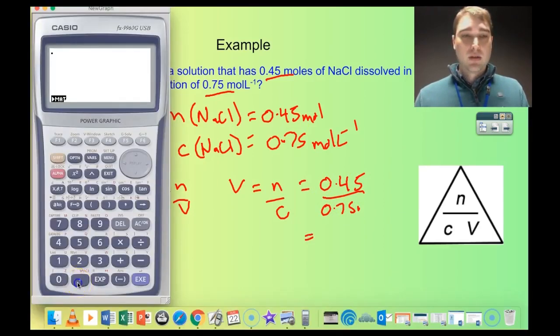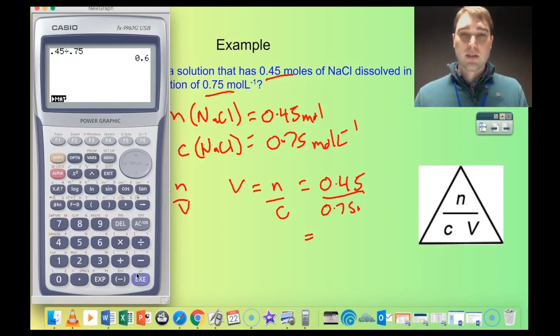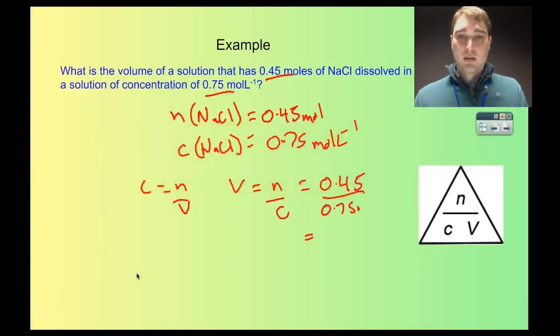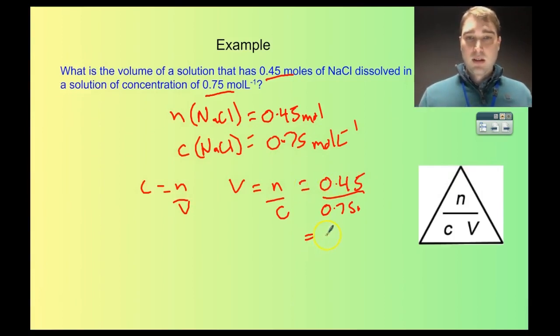So V equals 0.45 moles divided by 0.75 moles per litre. 0.45 divided by 0.75 gives us 0.6 litres.